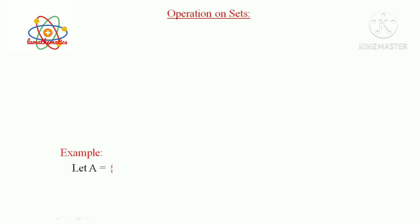Consider the sets: Capital A = {1, 2, 3}, Capital B = {2, 3, 4, 5}.